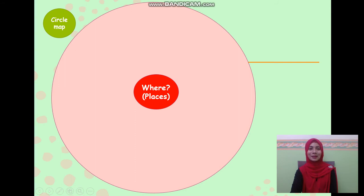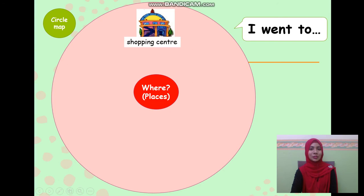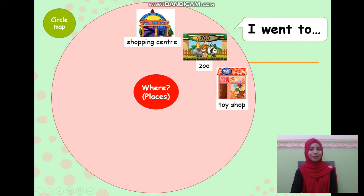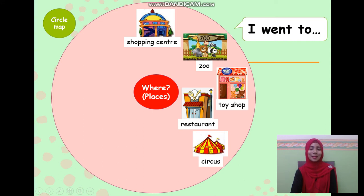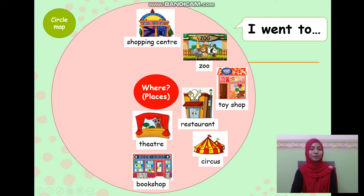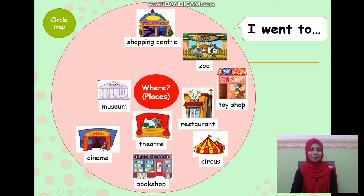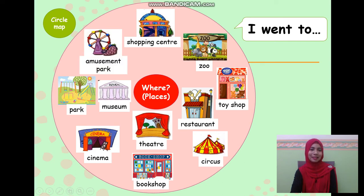Now, let's look at this circle map for more weekend activities. What did you do at the weekend? I went to the shopping centre. I went to the zoo. I went to the toy shop. I went to the restaurant. I went to the circus. I went to the theatre. I went to the bookshop. I went to the cinema. I went to the museum. I went to the park. I went to the amusement park.